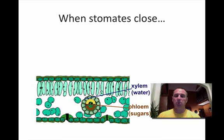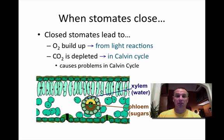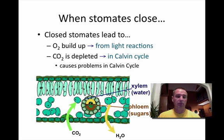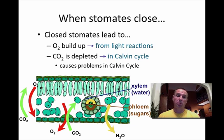But it does cause problems, because when the stomata is closed, you have an oxygen buildup from the light reaction, and carbon dioxide is not available for the Calvin cycle. When the stomata is open, water can leave, carbon dioxide can come in, and if there's too much carbon dioxide, it can go to the chloroplast. Oxygen that's made can also leave the chloroplast.